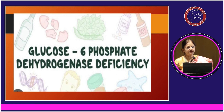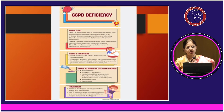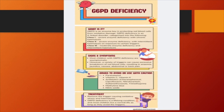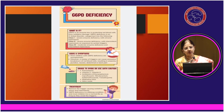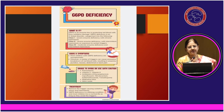Glucose-6-phosphate dehydrogenase (G6PD) deficiency is an X-linked disorder where the enzyme G6PD is deficient. Signs and symptoms are most commonly seen in children, and a variety of triggers can cause excessive breakdown of red blood cells resulting in anemia. Triggers include drugs like paracetamol, vitamin C, vitamin K, antibiotics like chloramphenicol, ciprofloxacin, nitrofurantoin, methylene blue, nitric oxide, and food products like fava beans. If we know a patient has G6PD deficiency, we should avoid using these drugs in those patients.